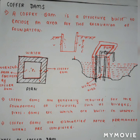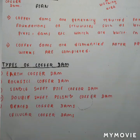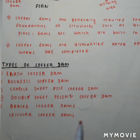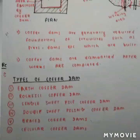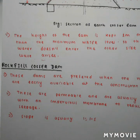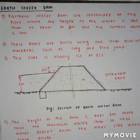There are various types of cofferdams. They are: earth cofferdam, rock fill cofferdam, single sheet pile cofferdam, double sheet piling cofferdam, braced cofferdams, and cellular cofferdams. Now let us move to the earth cofferdam.